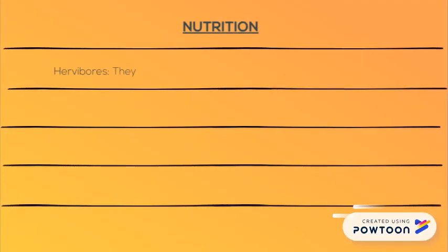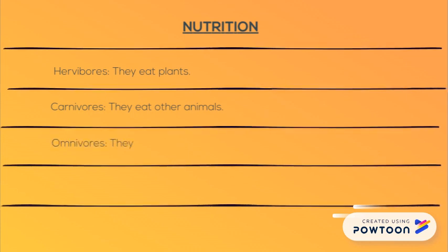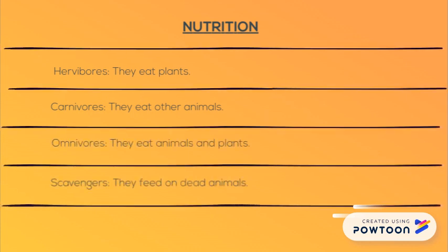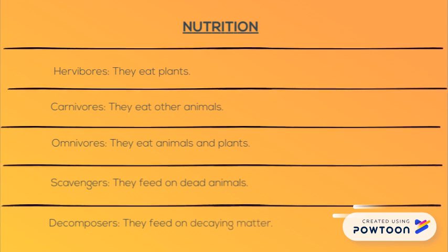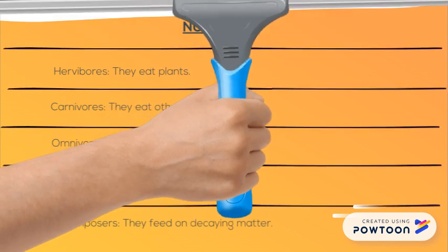Nutrition. Herbivores — they eat plants. Carnivores — they eat other animals. Omnivores — they eat animals and plants. Scavengers — they feed on dead animals. And decomposers — they feed on decaying matter.